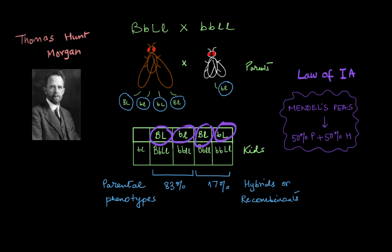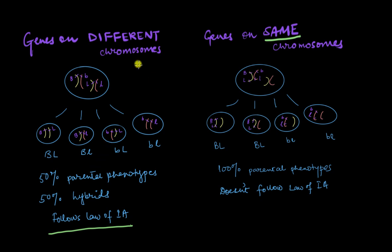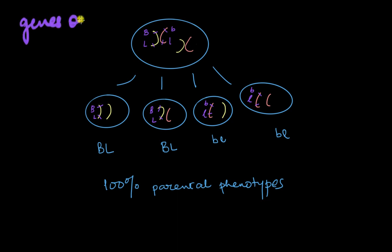So now we have to figure out why this happened — why didn't Morgan get the 50-50 population? Looking into gamete production, we discovered that the genes responsible for the traits in this cross are present on the same chromosome. If they were on different chromosomes, they would follow the law of independent assortment and give us that perfect 50-50 proportion. Since that didn't happen, we can be sure the genes are on the same chromosome.